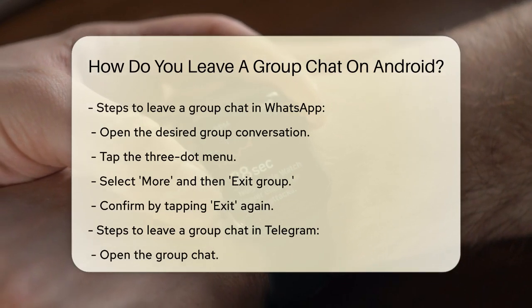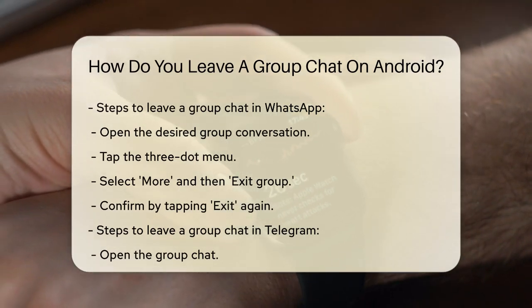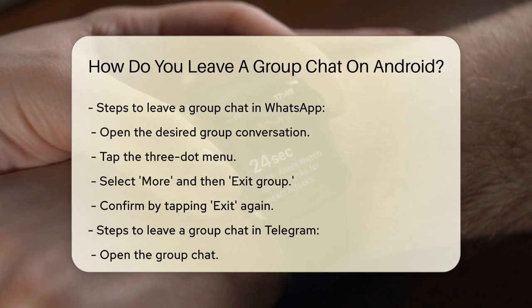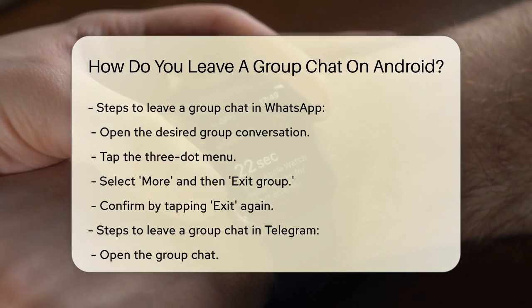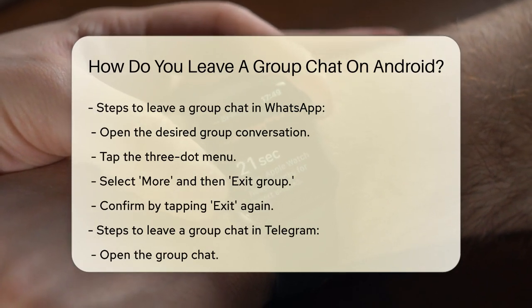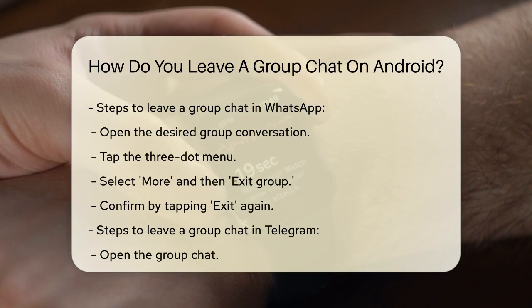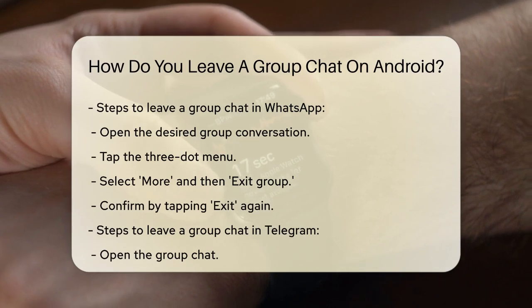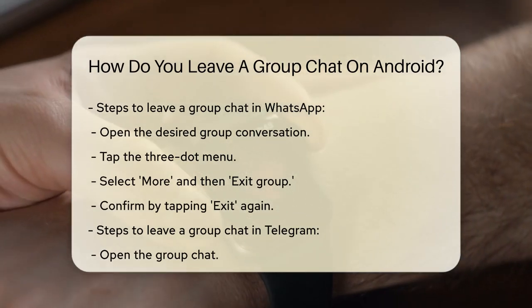On Telegram, it's just as easy. Open the group you want to leave. Tap the three-dot menu in the upper right corner and select Delete and Leave Group. You'll get a confirmation prompt. Tap Delete Chat to finalize your exit.